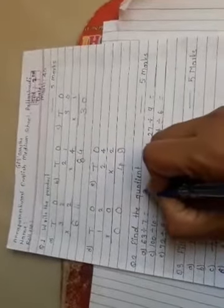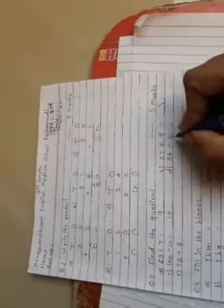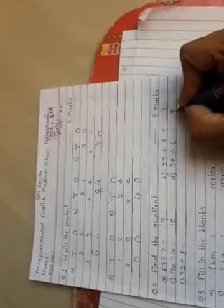Next, find the quotient. 63 divided by 7 equals 9, because seven nines are sixty-three. Twenty-seven divided by nine equals three. One hundred divided by ten equals ten. Forty-four divided by six, no wait, six nines are fifty-four. Seventy-two divided by eight equals nine. If you memorize the multiplication table, you can do both multiplication and division.